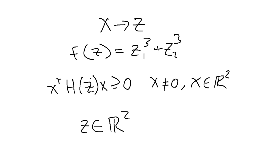The reason we did the variable substitution is because we want to evaluate whether the Hessian is positive semi-definite for all points in R². At any particular point z, we need to check whether x^T times the Hessian times x is greater than or equal to zero for all x ≠ 0 in R². So z is the evaluation point and x is the test variable.